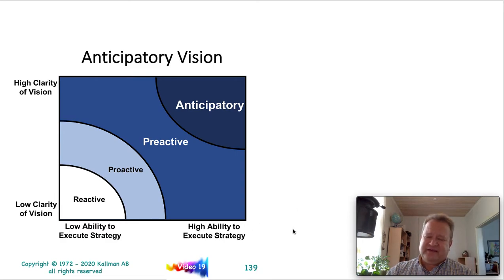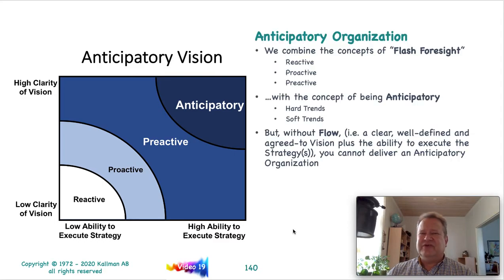Basically what we're doing is we're combining the concepts of flash foresight. Dr. Daniel Burris has written a couple books. Two of his most recent books are Flash Foresight, where Dr. Burris talks about reactive, proactive, and preactive. And then in his most recent book, he talks about the anticipatory organization and looking at the hard trends and the soft trends, as we mentioned in the beginning of this video.